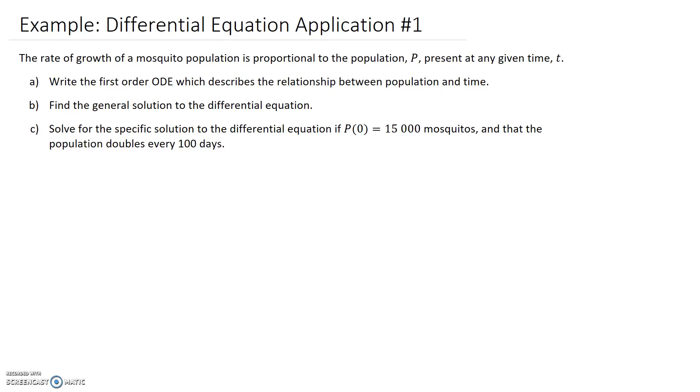This question looks at differential equations in the context of a specific application. We're told that the rate of growth of a mosquito population is proportional to the population P present at any given time t.